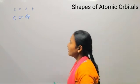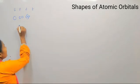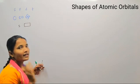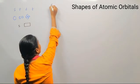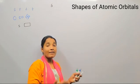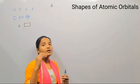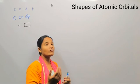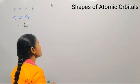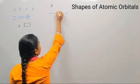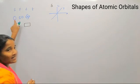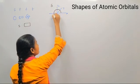The s orbital can be represented by only one box, meaning it contains only one orientation. An orbital is a three-dimensional structure where there is maximum probability of finding an electron. In the universe we have only three coordinates: the x-axis, y-axis, and z-axis. The s orbital has a spherical shape.